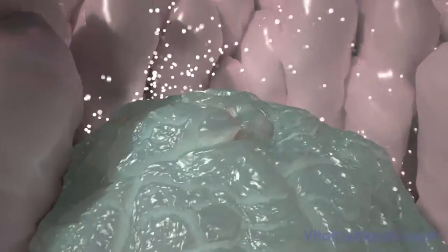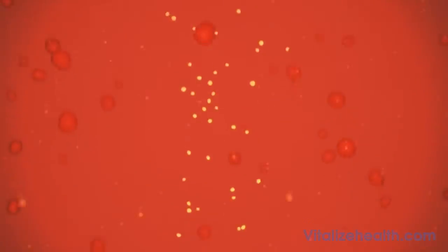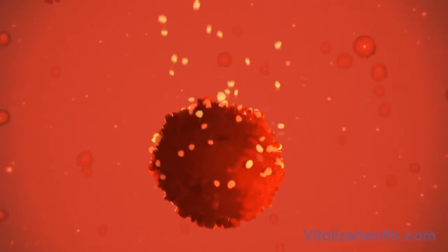Peyer's patches are covered by an epithelium that contains specialized cells called microfold cells. These M cells pick up and transport the beta-glucan particles into the body and present them to innate immune cells called macrophages.